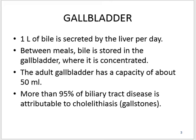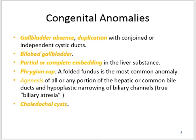More than 95% of biliary tract disease is attributable to cholelithiasis, that is gallstones. Congenital anomalies of the gallbladder may be gallbladder absence or duplication with conjoined or independent cystic ducts, bilobed gallbladder, partial or complete embedding in the liver substance, phrygian cap — folded fundus — which is the most common anomaly, agenesis of all or any portion of the hepatic or common bile duct, and hyperplastic narrowing of biliary channels that is called true biliary atresia.